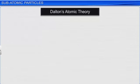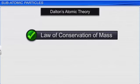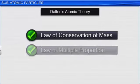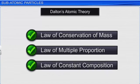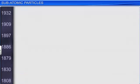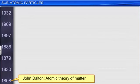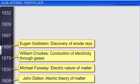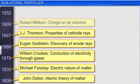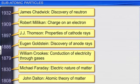Compounds are formed from atoms of the constituent elements. Dalton's atomic theory was able to explain the laws of conservation of mass, multiple proportion, and constant composition. However, it could not explain the results of many experiments conducted by scientists in the later part of the 19th century and 20th century.